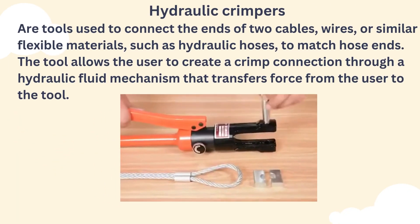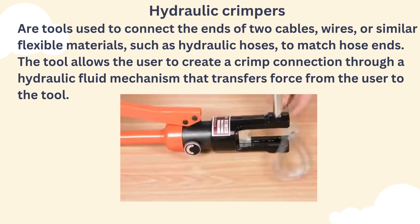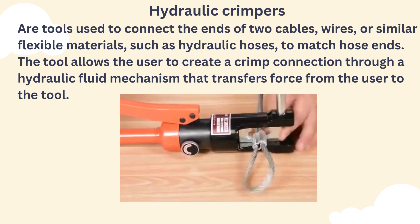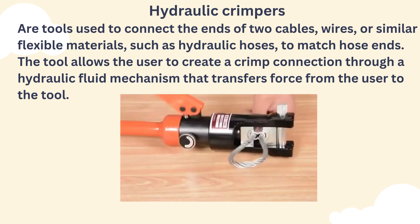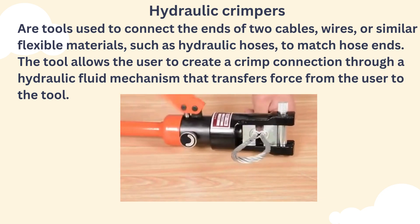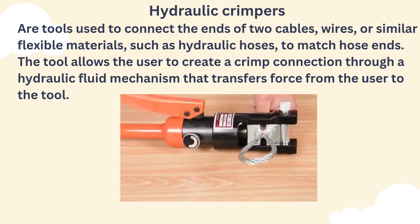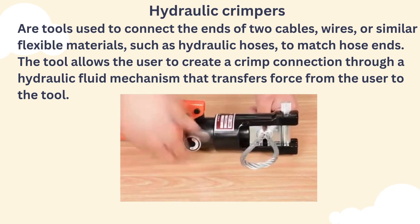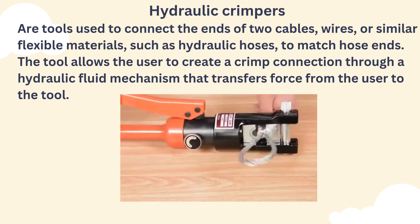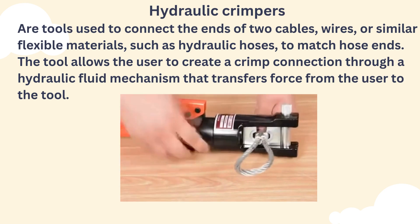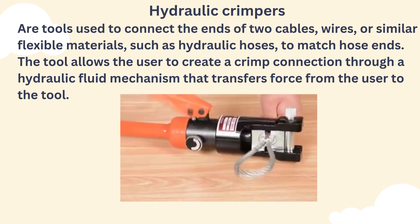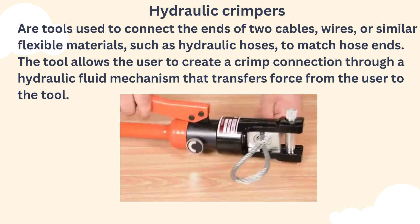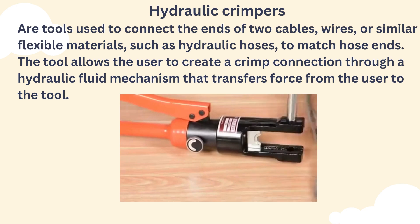Hydraulic crimpers are tools used to connect the ends of two cables, wires, or similar flexible materials such as hydraulic hoses, to match hose ends. The tool allows the user to create a crimp connection through a hydraulic fluid mechanism that transfers force from the user to the tool.